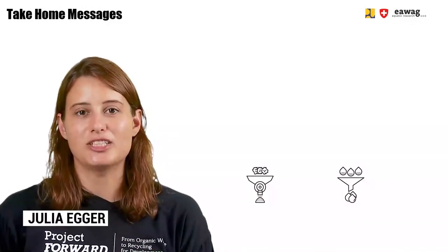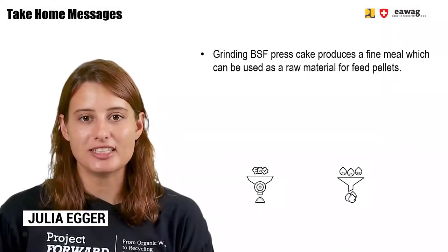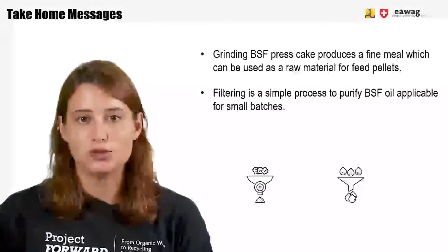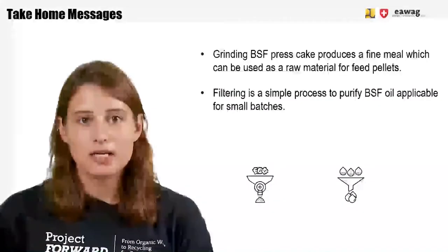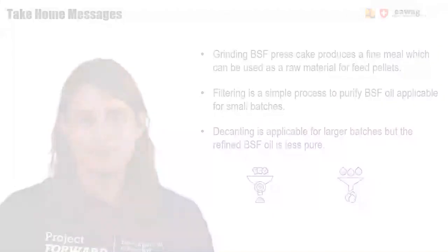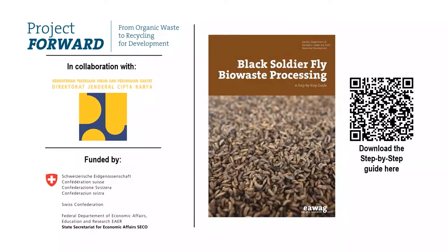We are at the end of this module. We saw that grinding BSF Press Cake produces a fine meal usable as a raw material for feed pellets. Filtering is a simple process to purify BSF Oil and is applicable for small batches, while decanting is applicable for larger batches though the refined oil is less pure. Thank you for watching. More information can be found in the BSF step-by-step guide via the QR code. These materials were part of the Forward Project by EWAC in collaboration with the Ministry of Public Works in Indonesia, funded by SECO, the Swiss State Secretariat for Economic Affairs.